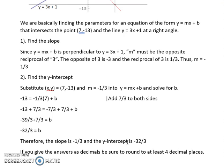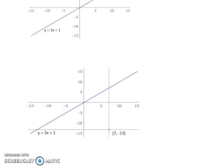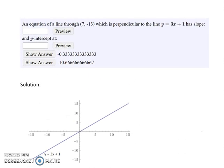Slope of -1/3, y-intercept of -32/3. If we divide these fractions, converting them to decimals, and then give our answer to at least four decimal places, we will get these numbers: -0.3333 and -10.6667.